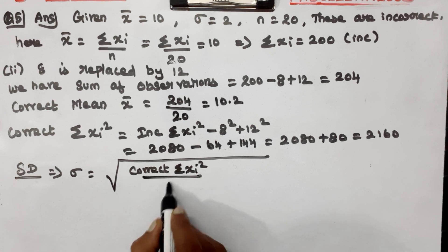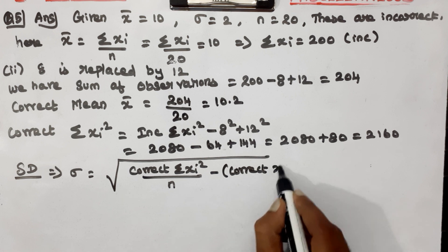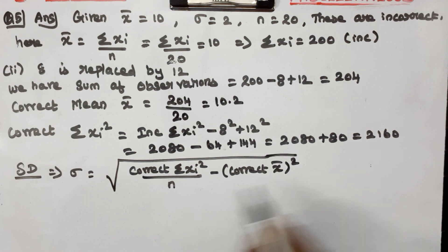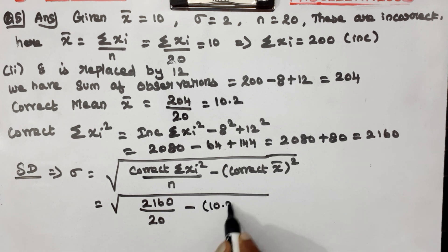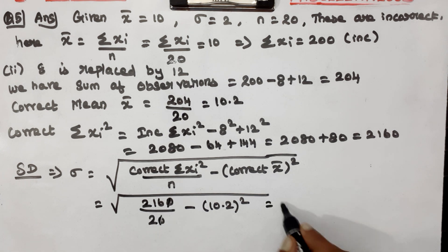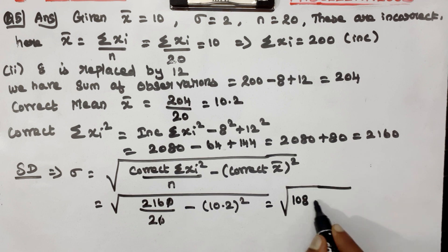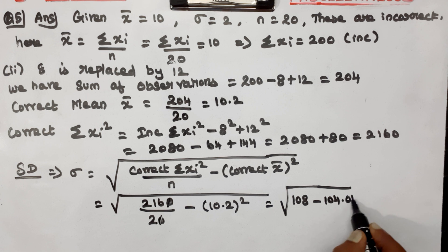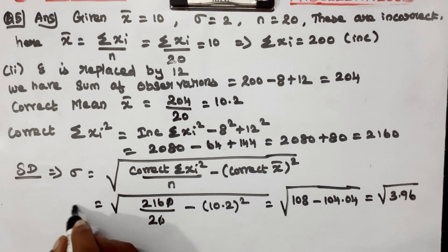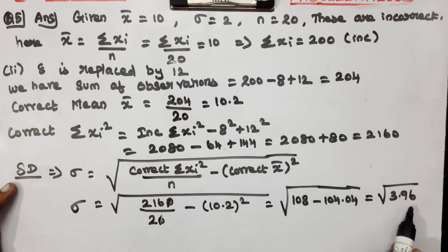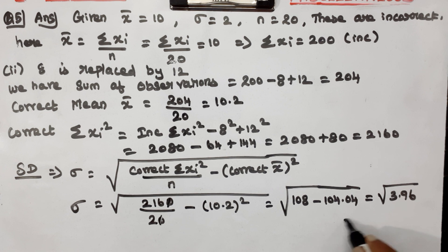Correct standard deviation formula: SD = square root of (correct summation xi² / n − x-bar²) = square root of (2160/20 − 10.2²) = square root of (108 − 104.04) = square root of 3.96 ≈ 1.98.